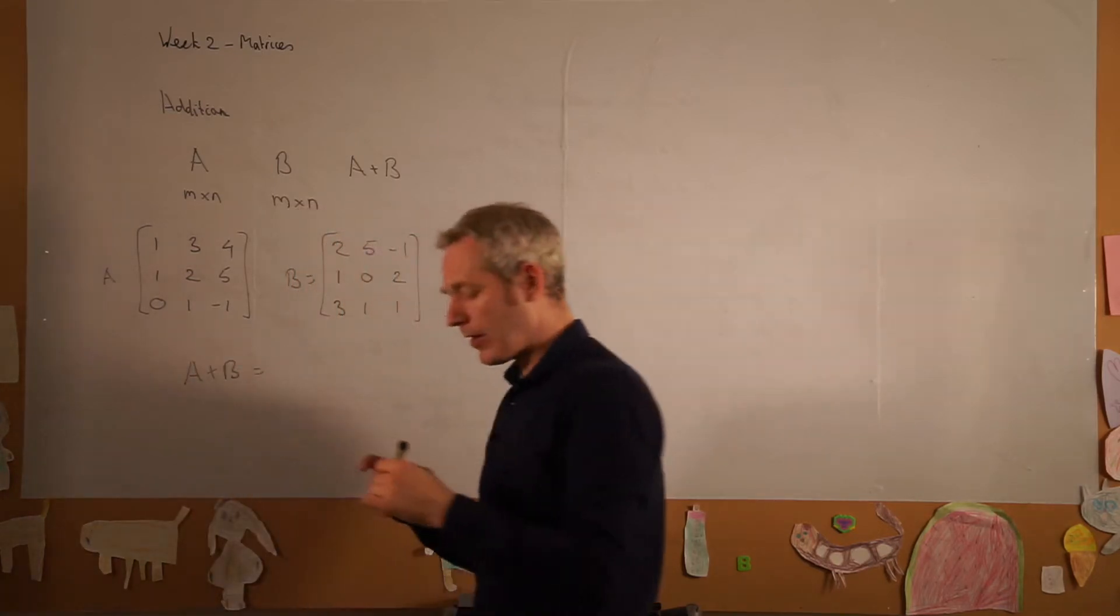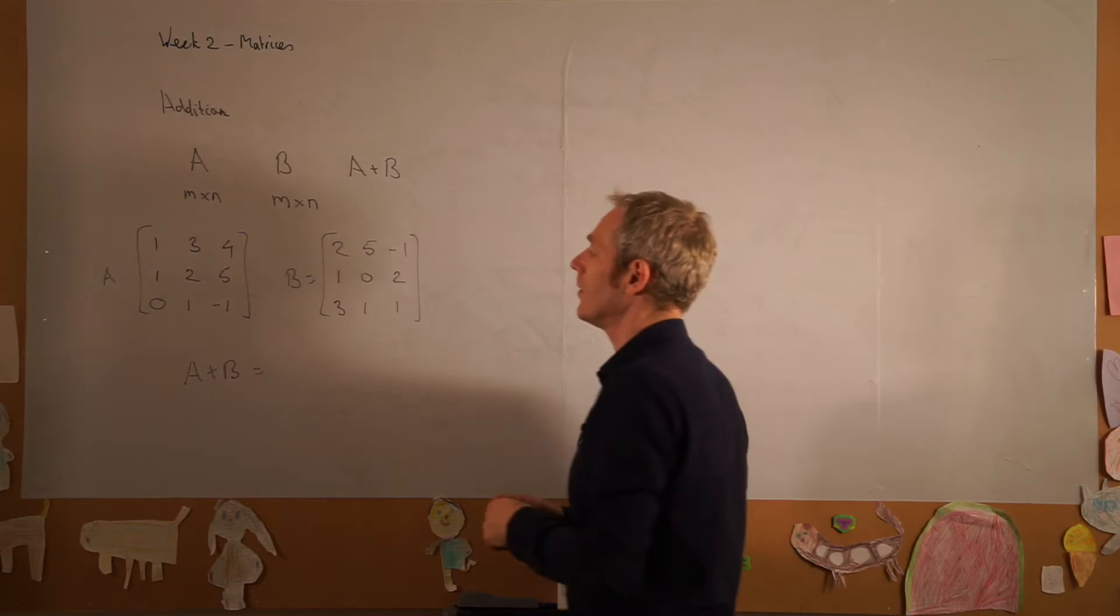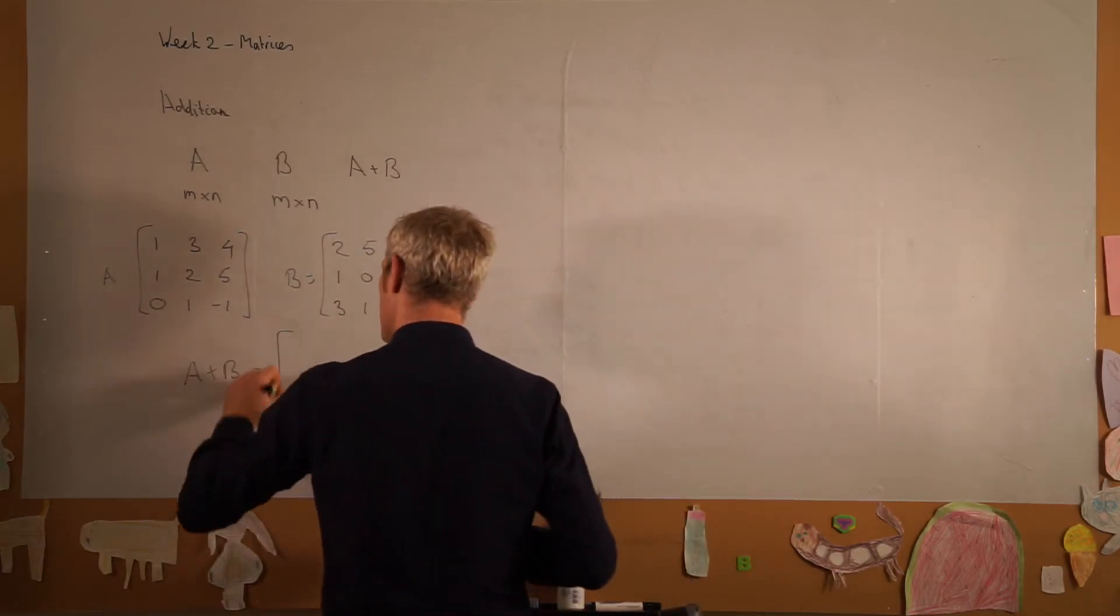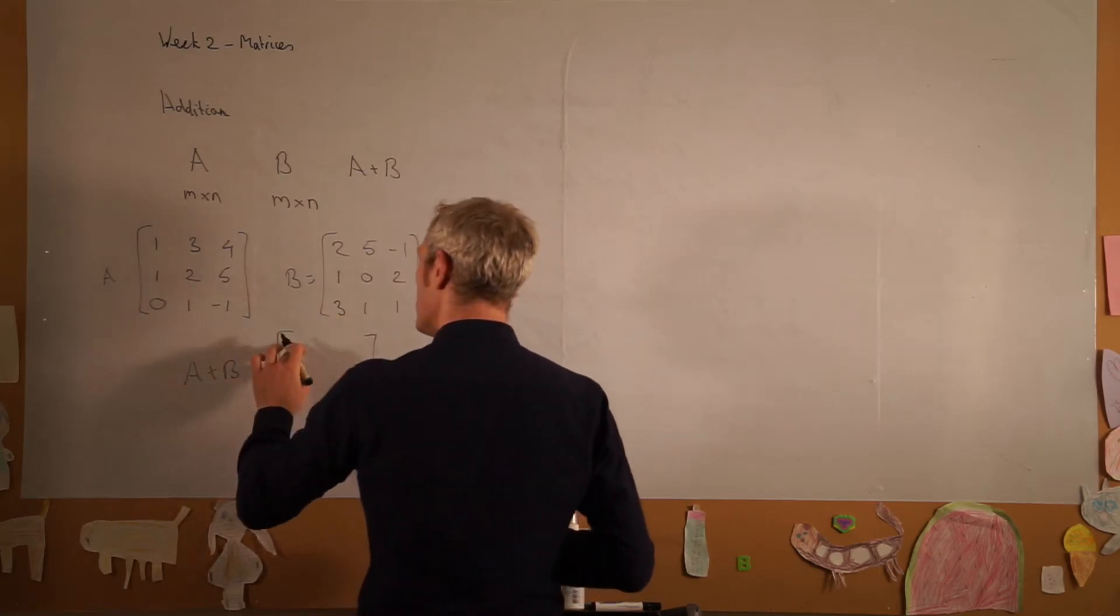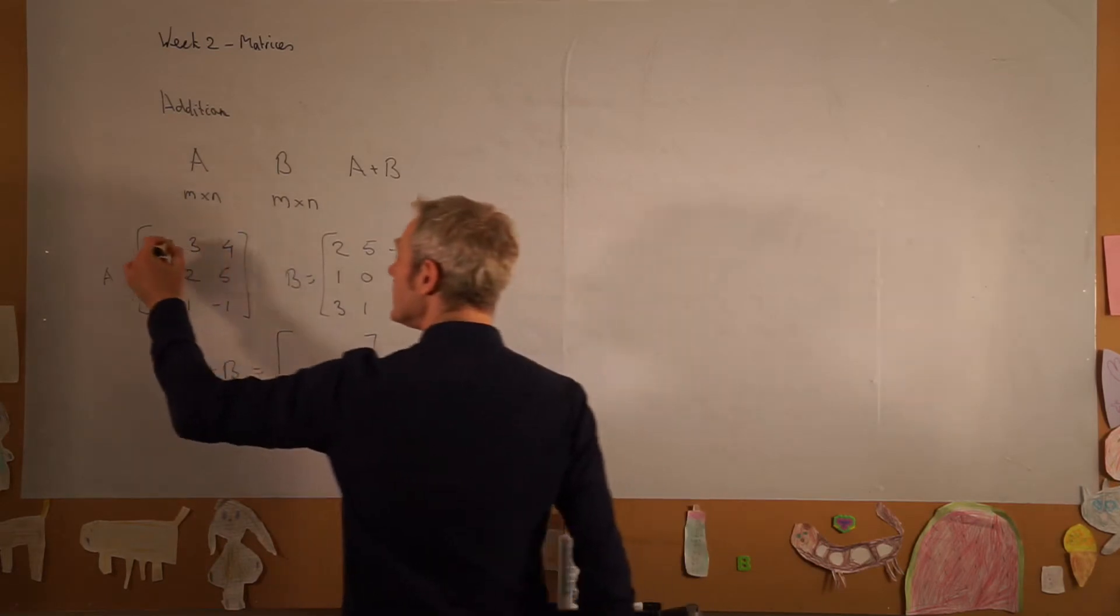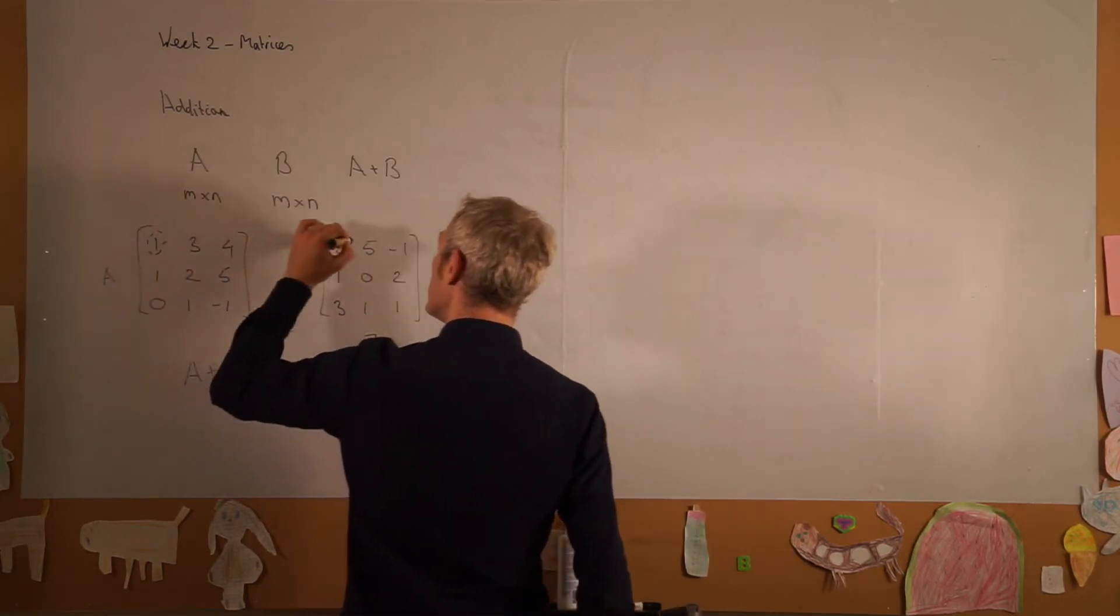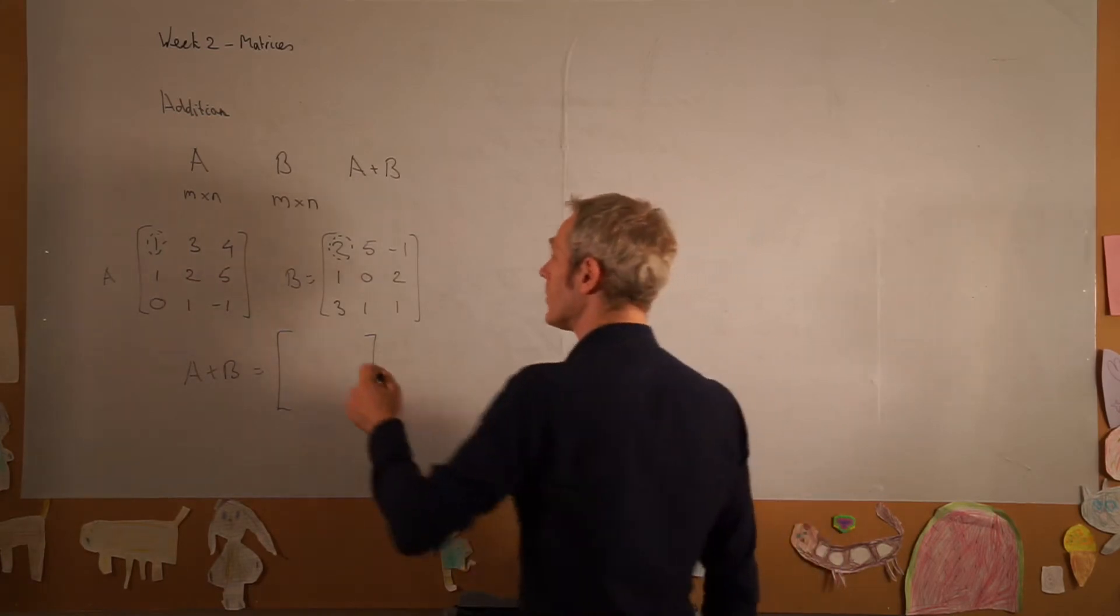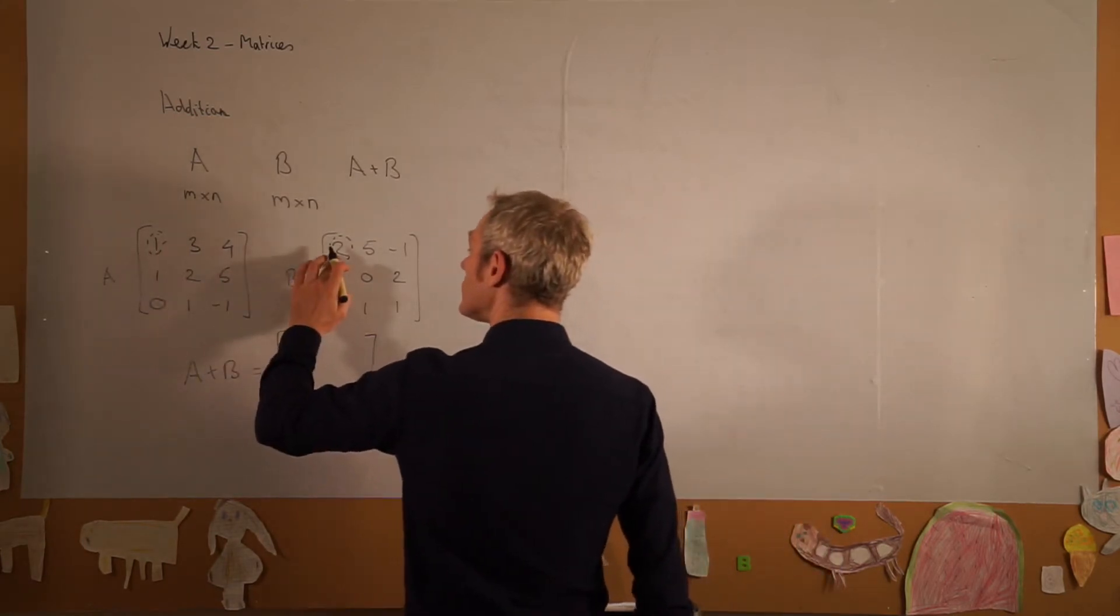is formed with the first element consisting of 3 by 3 elements. The element in the top left corner will be the sum of the elements in the top left corner of the two matrices, so that will be equal to 1 plus 2, which is equal to 3.